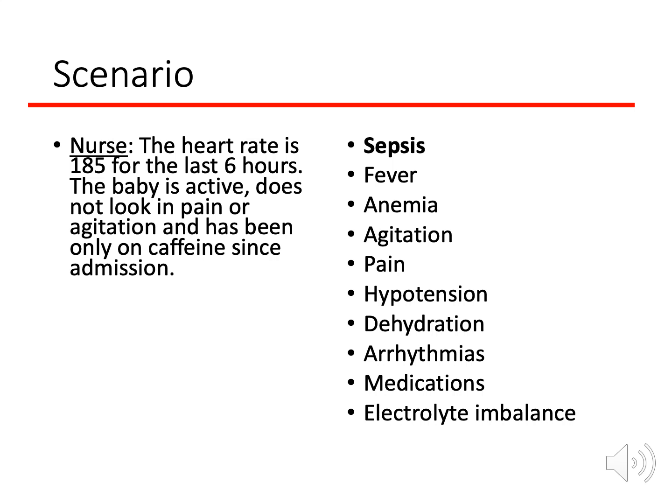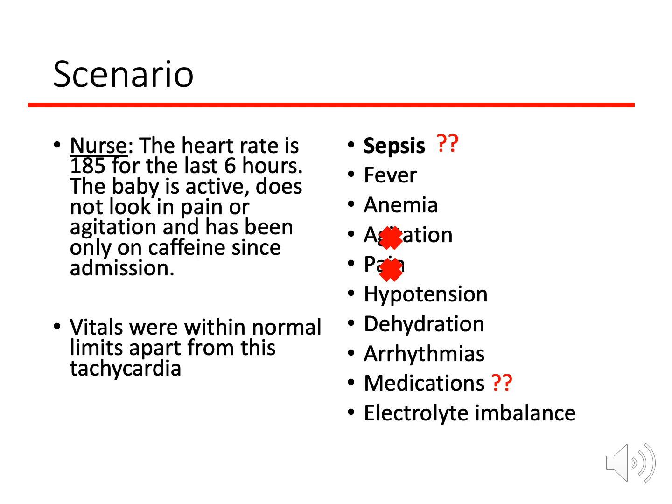To narrow the diagnosis, gather more information. The nurse tells you: heart rate is 185 for the last six hours, the baby is active, doesn't appear to be in pain, pain score is low, the baby is not agitated, and has been only on caffeine since admission. Going back to the differential: agitation and pain can be ruled out from the nursing assessment. Caffeine rarely causes tachycardia but we keep a question mark there. Vitals are otherwise within normal limits, so fever and hypotension can now be cancelled.